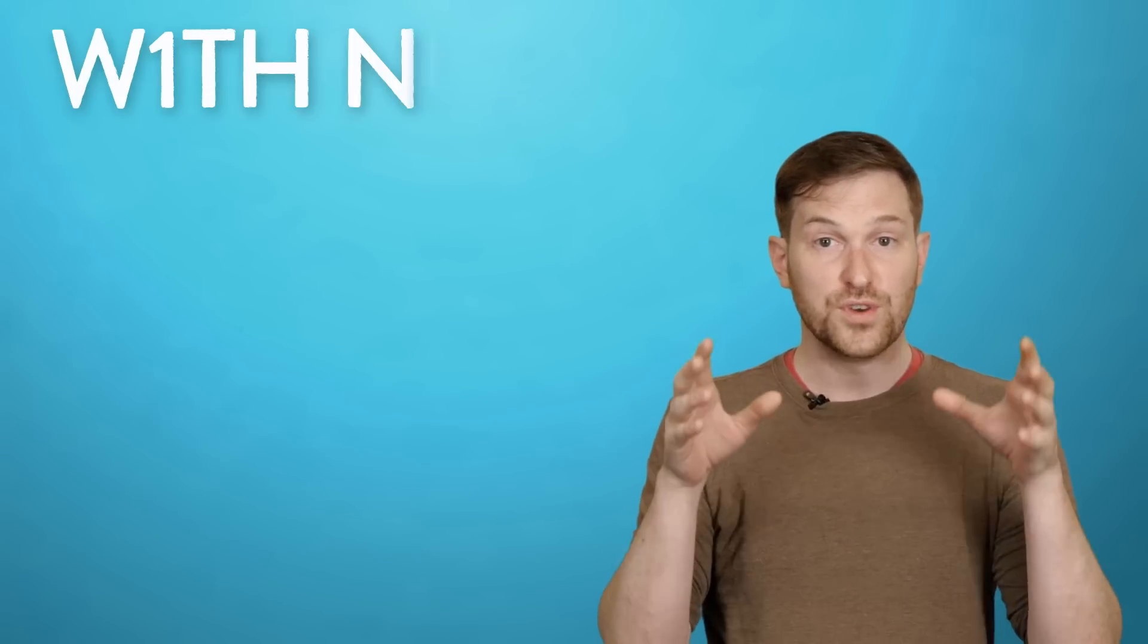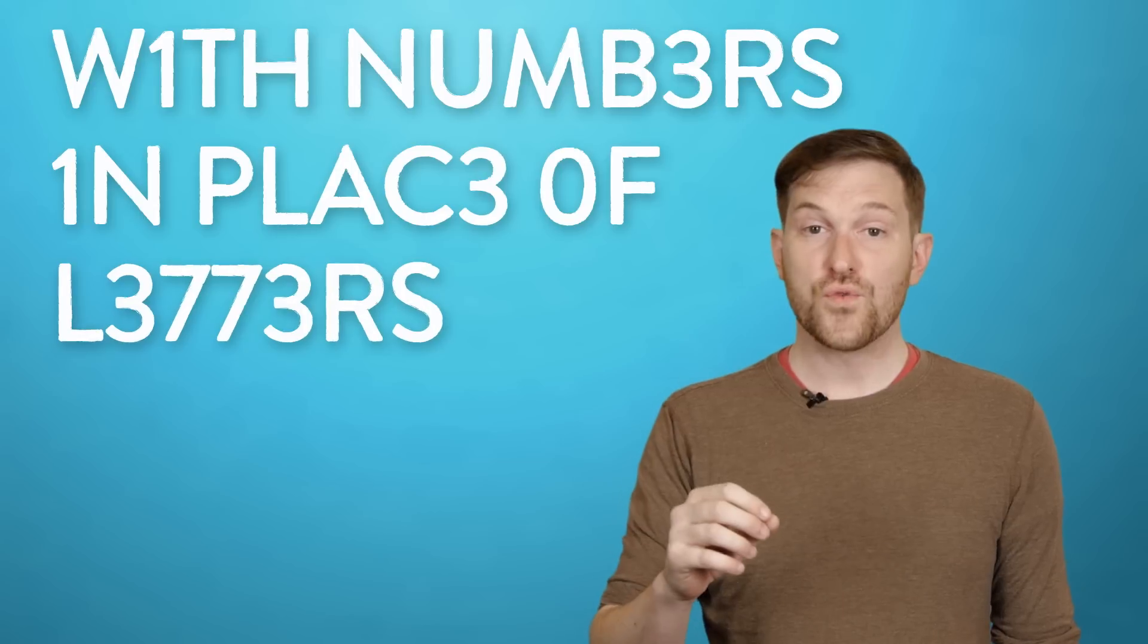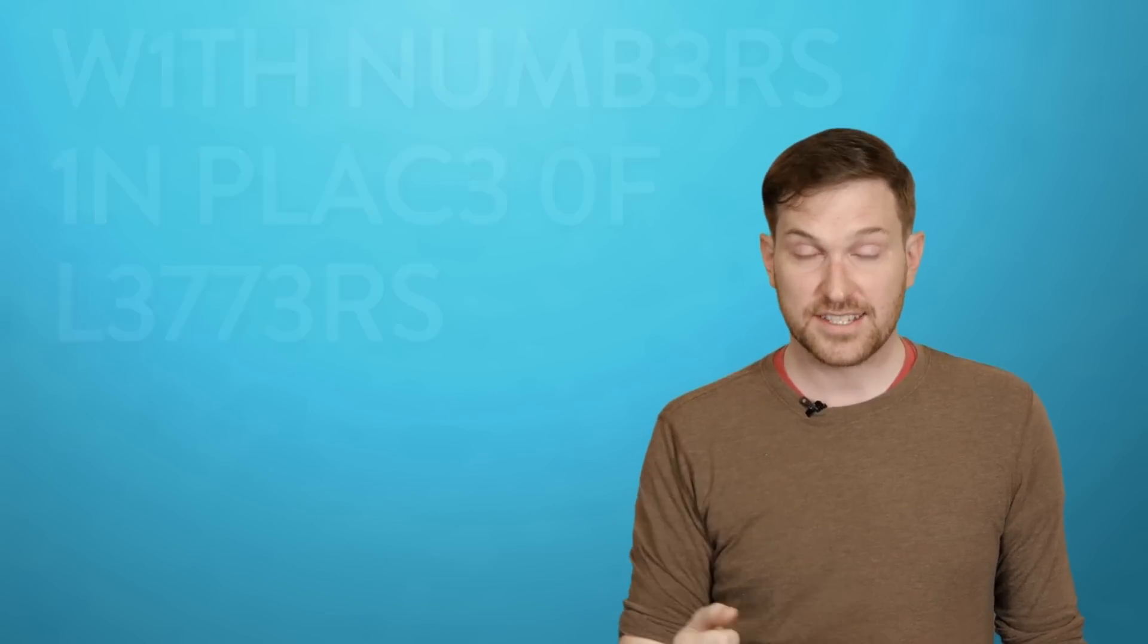Your brain processes all of the letters of a word at once, using them as a context for each other. It's like it's looking at the forest instead of individual trees. But that's also why you can read words with numbers in place of letters. The letter-like appearance, in context, overrides their actual status as numbers.